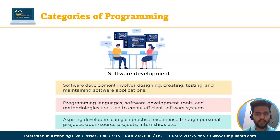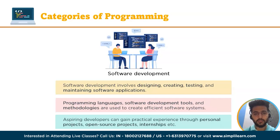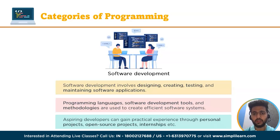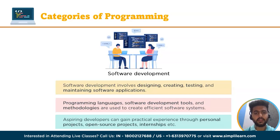To gain practical experience, aspiring software developers can work on personal projects, participate in open source projects or intern at software development companies. They can also enroll in coding boot camps, online courses or pursue a degree in computer science. To become a software developer, you need a strong foundation in computer science fundamentals including data structures, algorithms, computer architectures and operating systems. You will also need to learn programming languages such as Java, Python, C++ and JavaScript, and be proficient in at least one of these to write and develop software applications.